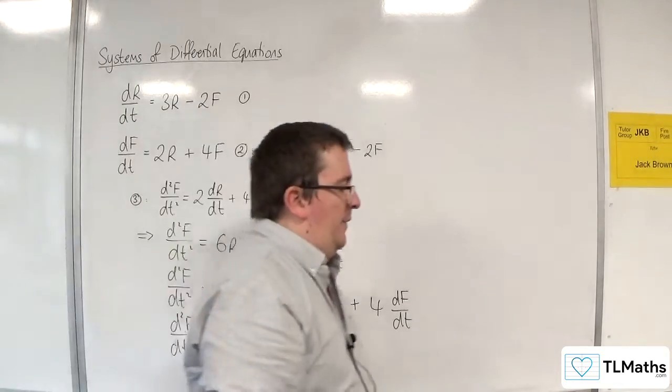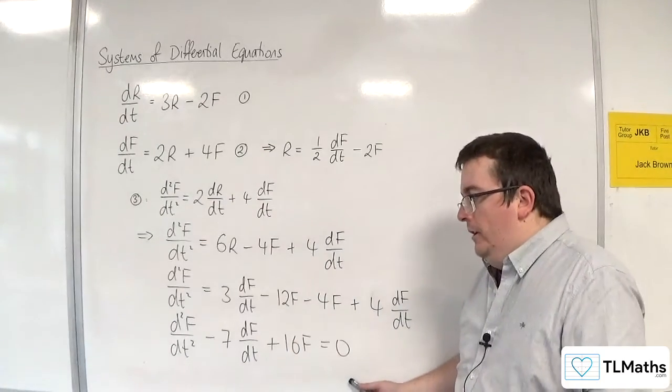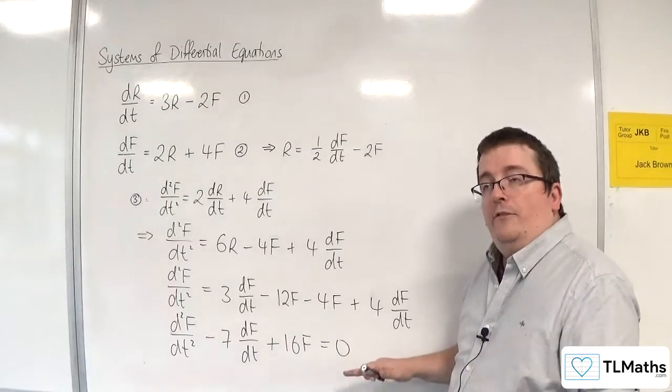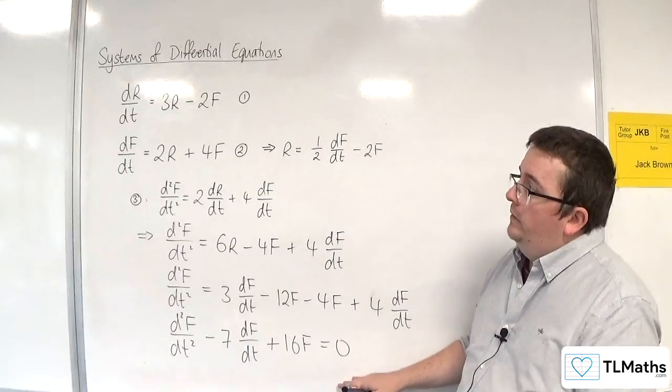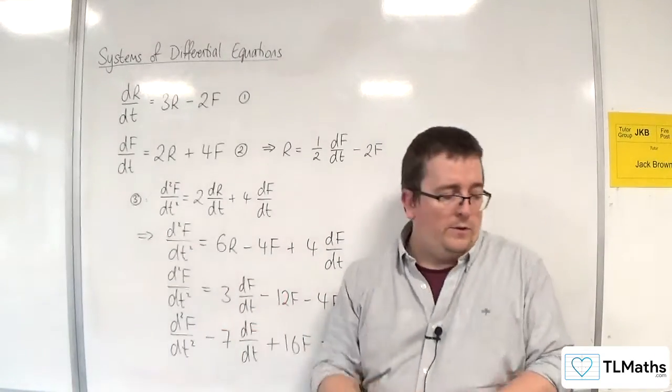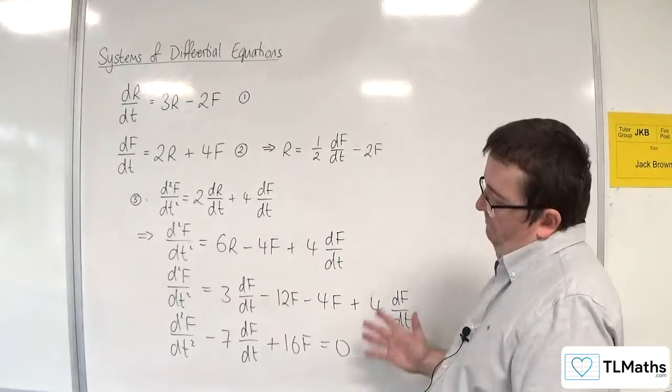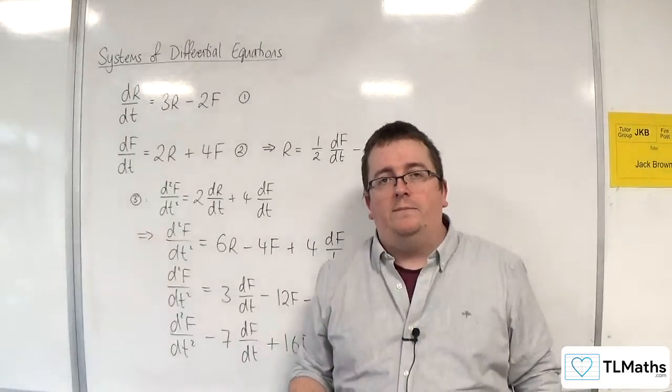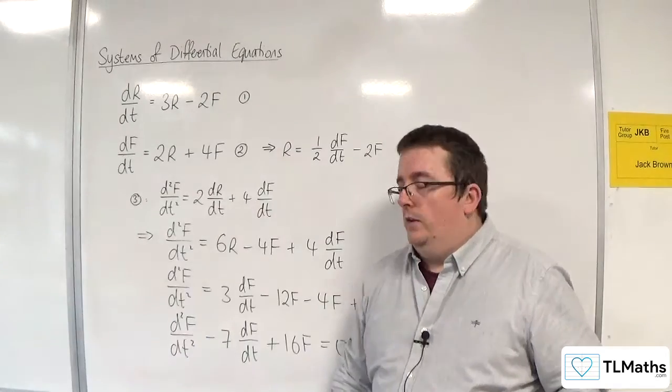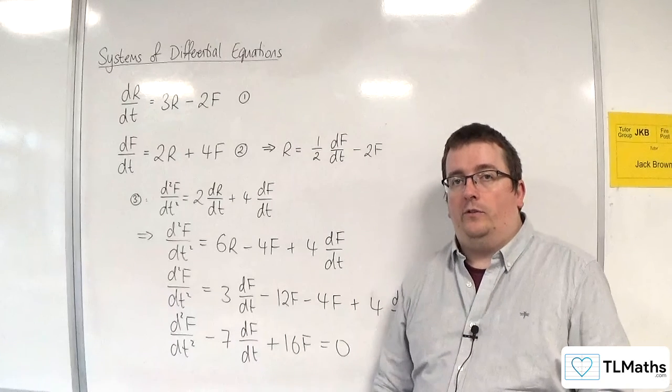And what I end up with is a second order differential equation we all know and love. We know how to solve. So that would allow me to then solve this differential equation and find F equals. And then I could substitute it into this to work out what R is equal to. Now I'm not actually going to do that because I've made the numbers up. So probably not going to be particularly nice in doing that. But that is the method that we are going to use here. So that's our method. And we're going to go through some examples in this section to see how it works in general.